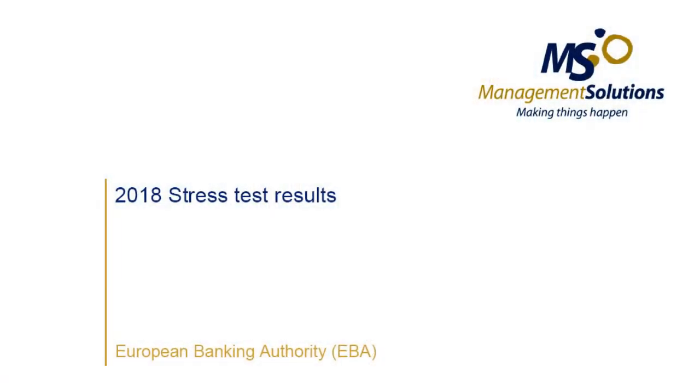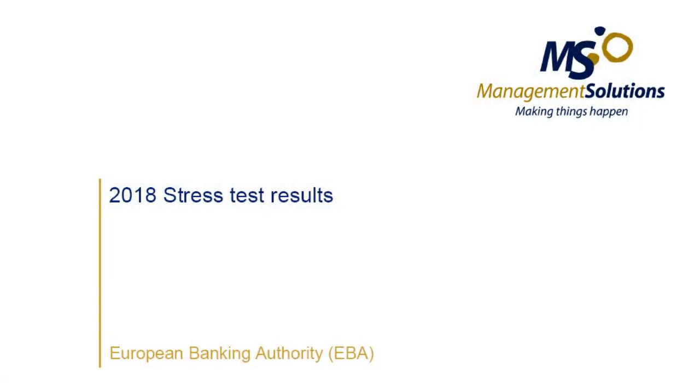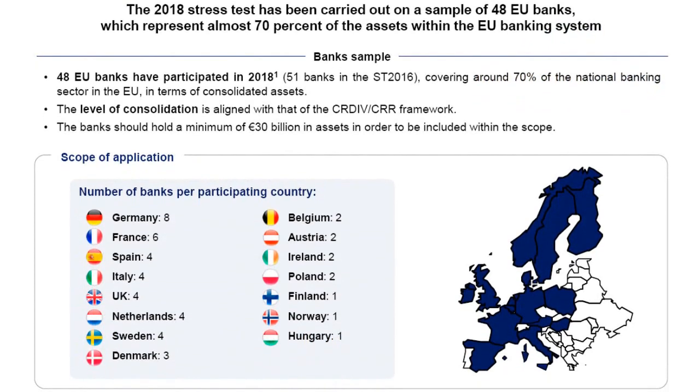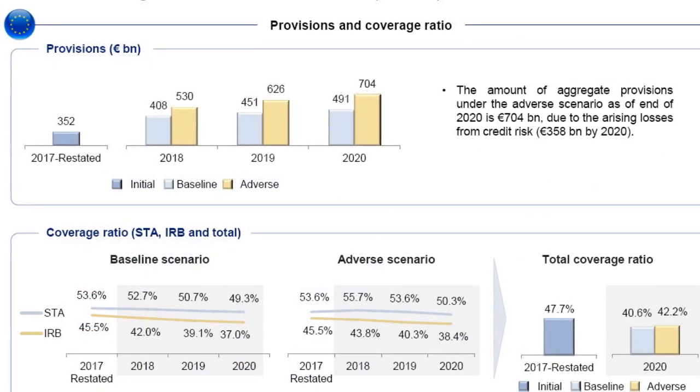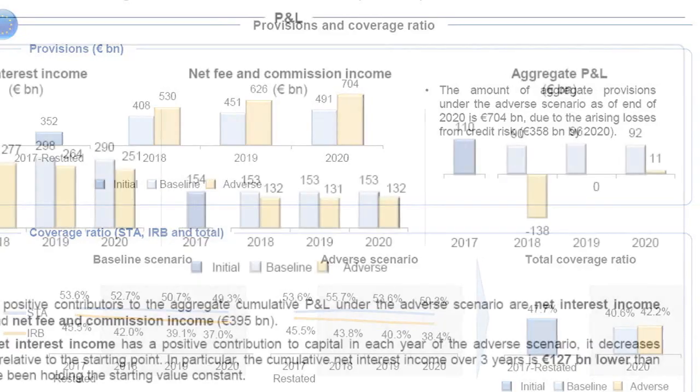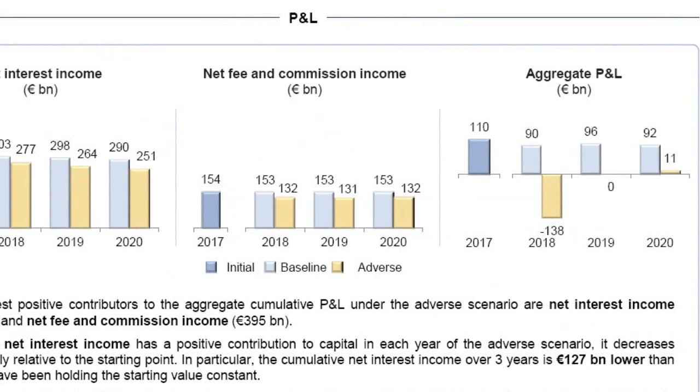In particular, this document analyses the main results of the 2018 stress test, focusing on the aggregate results across the EU, as well as on the results of those countries with higher level of assets within the banking system, analysing the following variables: capital, leverage ratio, risk-weighted assets, provision and coverage ratio, as well as P&L.